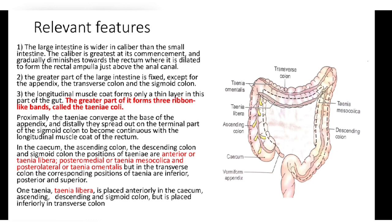In the transverse colon, the corresponding positions of the taeniae are inferior, posterior, and superior. Taenia libera is placed anteriorly in the cecum, ascending, descending, and sigmoid colon, but inferiorly in the transverse colon.